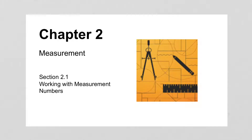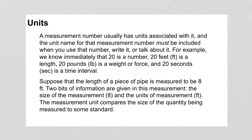In Chapter 2, we're going to begin looking at measurements, and today we're going to talk about how we talk about measurement numbers. Units. A measurement number usually has units associated with it, so it could be like 20 feet, or 20 pounds, or 20 seconds.